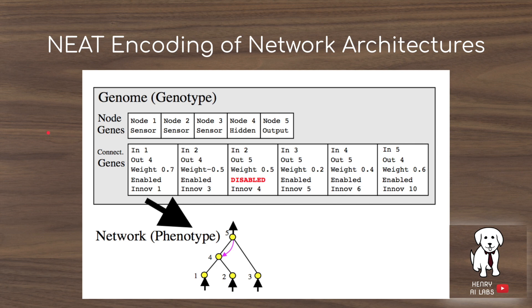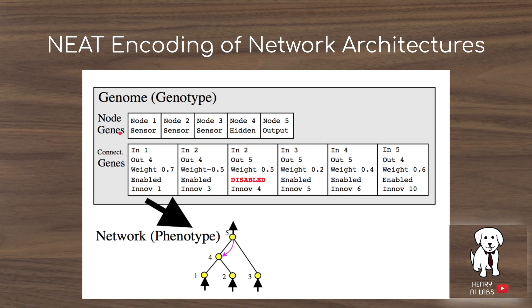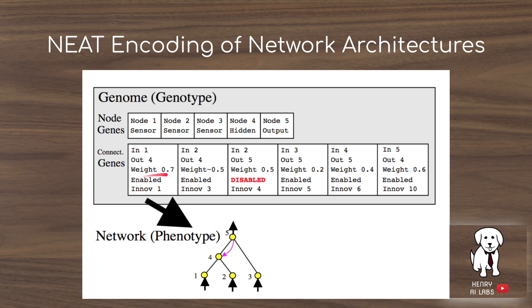This is the technique used in NEAT to encode neural network architectures. Each network architecture has a genotype and a resulting phenotype. The genotype has a node gene set and a connection gene set. The node gene set contains the input nodes, the number of hidden nodes, and the output nodes, used as a reference when connection genes find their in and out parameters to construct connections. Each connection gene contains the in value, out value, the weight, whether it's enabled or disabled, and an innovation number — which is the technique for how crossover is performed in NEAT.